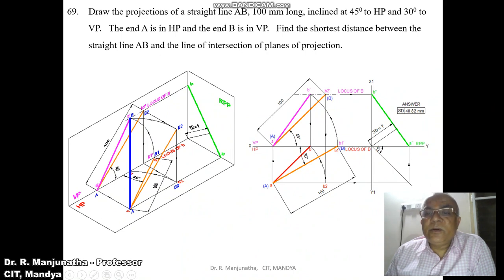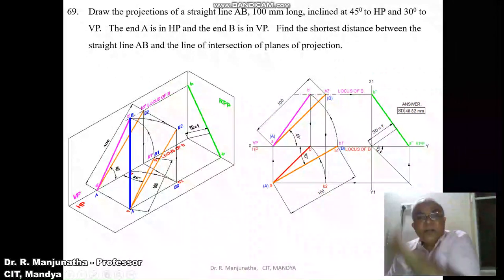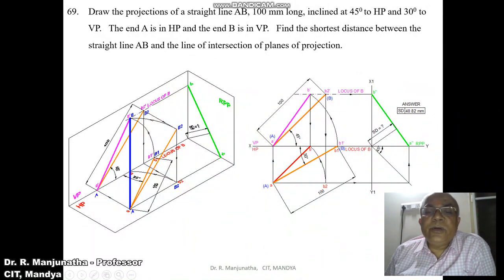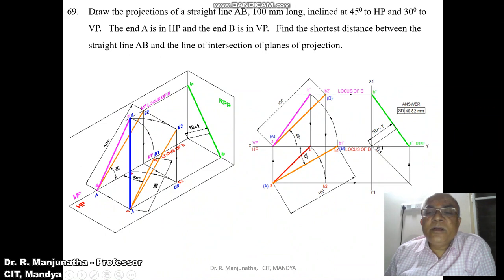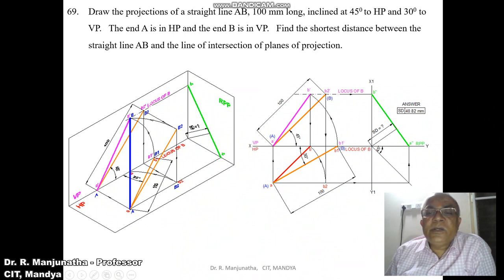From A-dash, draw a line at 45 degrees to 100 mm to get the locus of B in the front view. We now have the locus of B in both the front view and the top view. To find the front view, take the top view true length, which must be parallel to HP. Since A-dash is on HP, B1-dash must also be on HP. With A-dash as center and radius A-dash B1-dash, draw an arc to cut the locus of B in the front view. Mark this point as B-dash and join A-dash to B-dash.